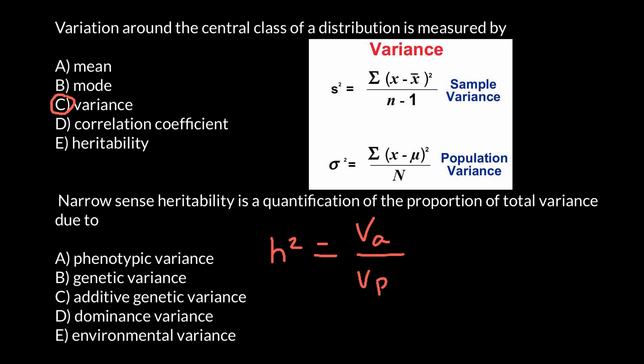Here we also have two formulas. Another way to calculate narrow sense heritability would be divide response to selection or R by selection differential by S.